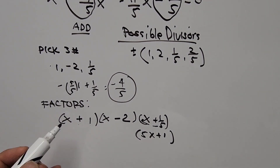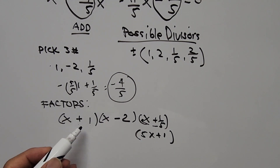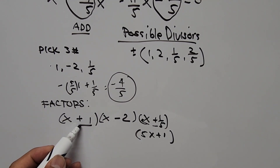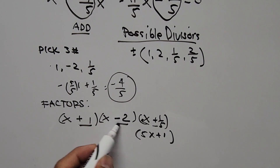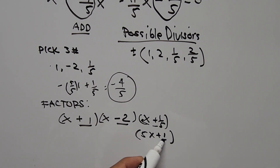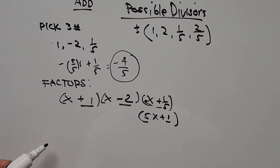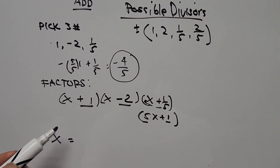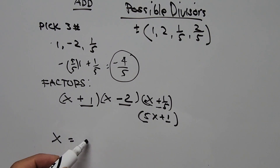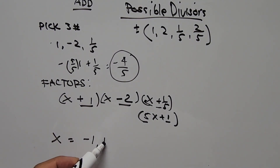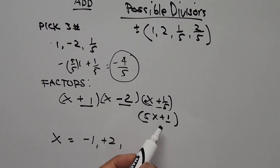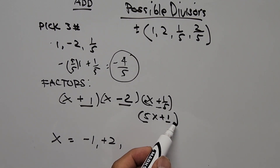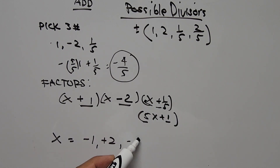To find the values of x, we just flip the signs. Positive 1 becomes negative 1, negative 2 becomes positive 2, and positive 1/5 becomes negative 1/5. So our set of solutions is x = −1, x = 2, and x = −1/5.